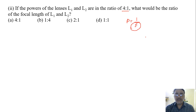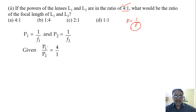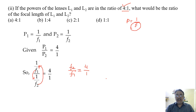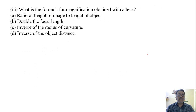Let the power of lens L1 be P1 with focal length f1, and the power of L2 be P2 with focal length f2. So P1 = 1/f1 and P2 = 1/f2. The ratio of powers P1/P2 = 4/1 is given. Substituting, we take the reciprocal: the ratio of focal lengths f1/f2 = 1/4.